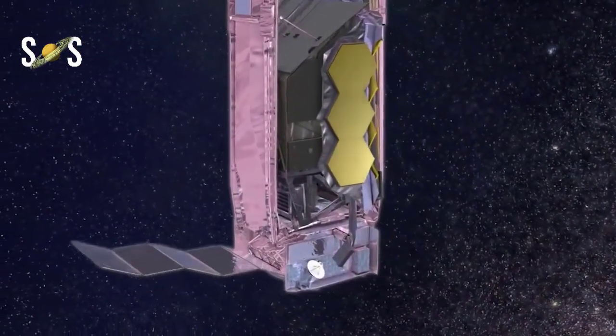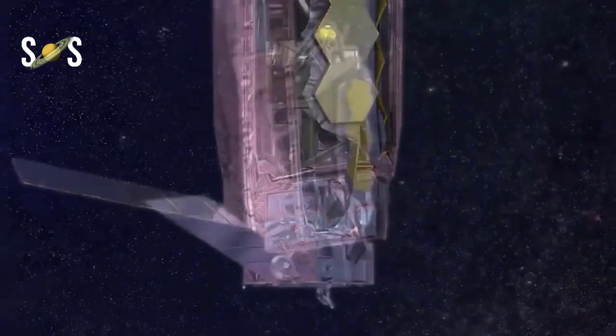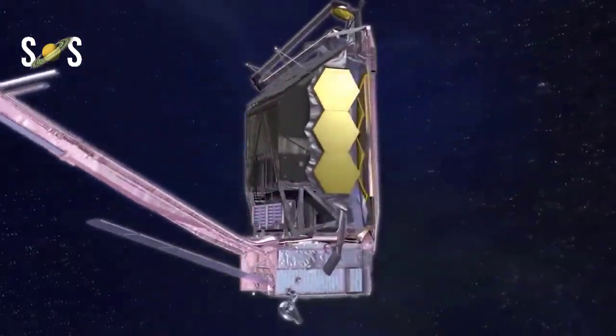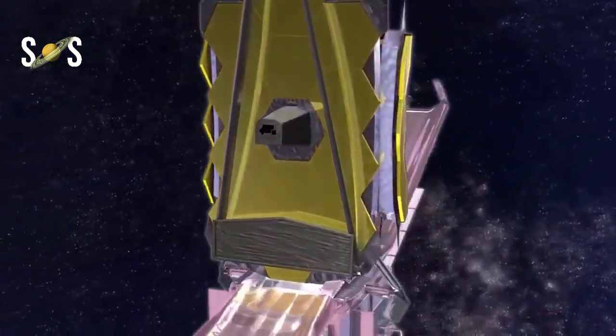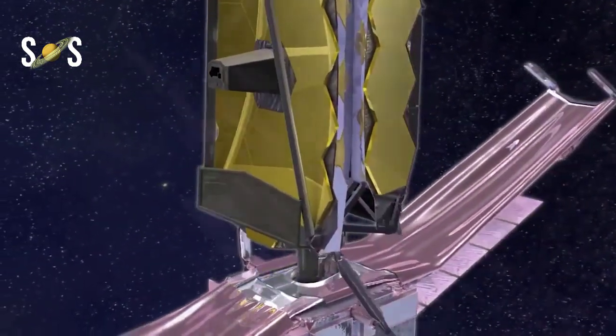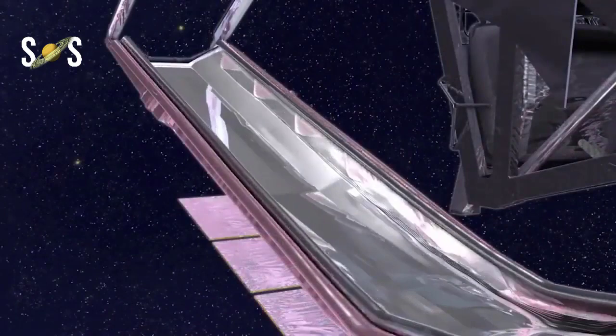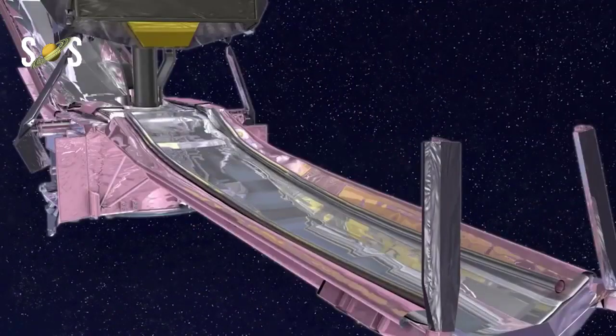The key factor is James Webb Telescope's golden mirror. The primary mirror is composed of 18 hexagonal-shaped mirror segments, each 1.32 meters in diameter and weighing approximately 20 kilograms. The convex secondary mirror is about 0.74 meters in diameter.